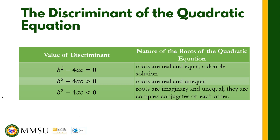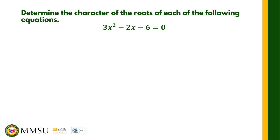We shall illustrate this property of the discriminant in the following examples. Determine the character of the roots of each of the following equations. We are not asked to solve for the roots — we just want to know the nature of the roots. We will solve for the discriminant: D equals b squared minus 4ac.